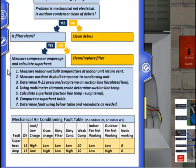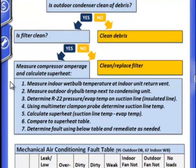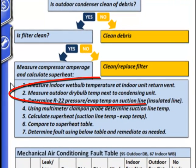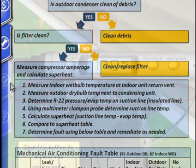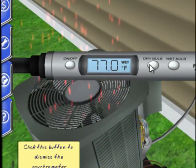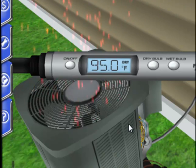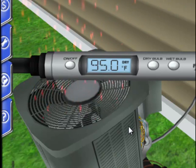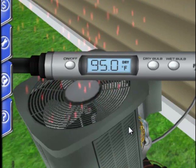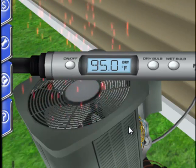Let's go back to the troubleshooting guide and look at the next step. We want to measure the outdoor dry bulb temperature near the condensing unit. Let's go there. Using our psychrometer this time on the dry bulb setting, we have a temperature of 95 degrees.